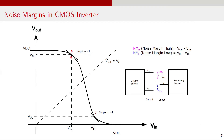To do this, we first identify the points on the transfer curve with slope equals to minus 1. Let's label these points as A and B. We then find out the input voltages and the output voltage corresponding to these points. For point A, input voltage is VIL and output voltage is VOH. For point B, input voltage is VIH and output voltage is VOL. Once we find these points, we can define noise margin high as VOH minus VIH and noise margin low as VIL minus VOL.